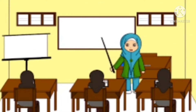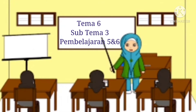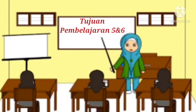Tujuan pembelajaran kita hari ini yaitu: siswa mampu mengidentifikasi kalimat ungkapan perintah dan tanggapan dengan tepat; siswa dapat mengidentifikasi ciri-ciri karya seni 3 dimensi dari bahan lunak; serta dapat mengidentifikasi alat dan bahan yang digunakan untuk membuat bunga dengan bahan lunak seperti plastisin; serta siswa dapat menjelaskan ungkapan perintah yang terdapat pada teks atau gambar dengan tepat.